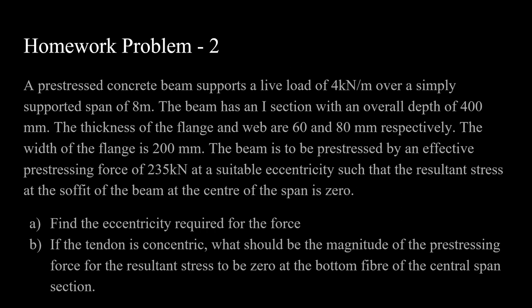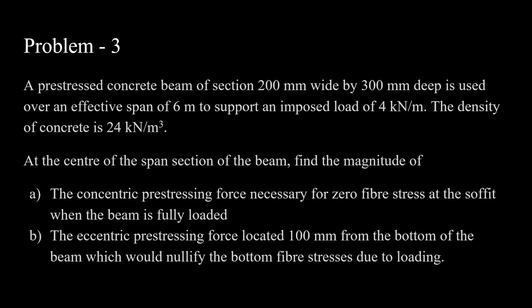Practice Problem 4: A pre-stressed concrete I-section beam with 8-meter span and given live load. The pre-stressing force is 235 kN. Condition 1: find the eccentricity such that resultant stress at the soffit is zero at mid-span. Condition 2: if the tendon is concentric (no eccentricity), find the magnitude of pre-stressing force for the resultant stress to be zero at the bottom fiber. The logical approach is to set the relevant stress equation to zero and solve for the unknown.